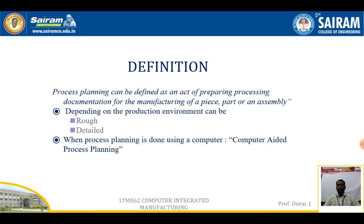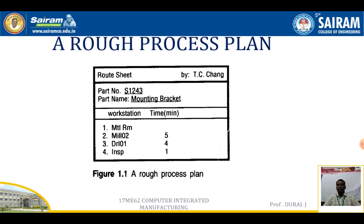Depending upon the production environment, there can be a rough process plan and a detailed process plan. In the rough process plan, it mainly discusses what type of operation is going on, what is the cycle time, and who prepared the particular process plan. These are the things discussed in the rough process plan.